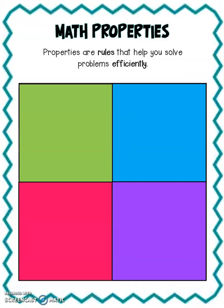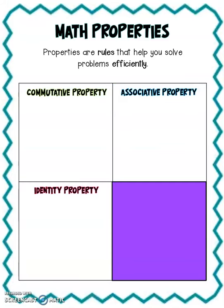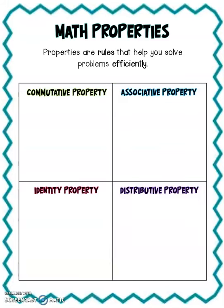Believe it or not, you actually use these properties probably without even realizing it, because you're looking for ways to help put together numbers in a more efficient way that makes sense. So in fifth grade, we're going to talk about four main properties: the commutative property, the associative property, the identity property, and the distributive property. This video is going to look more closely at the first three.